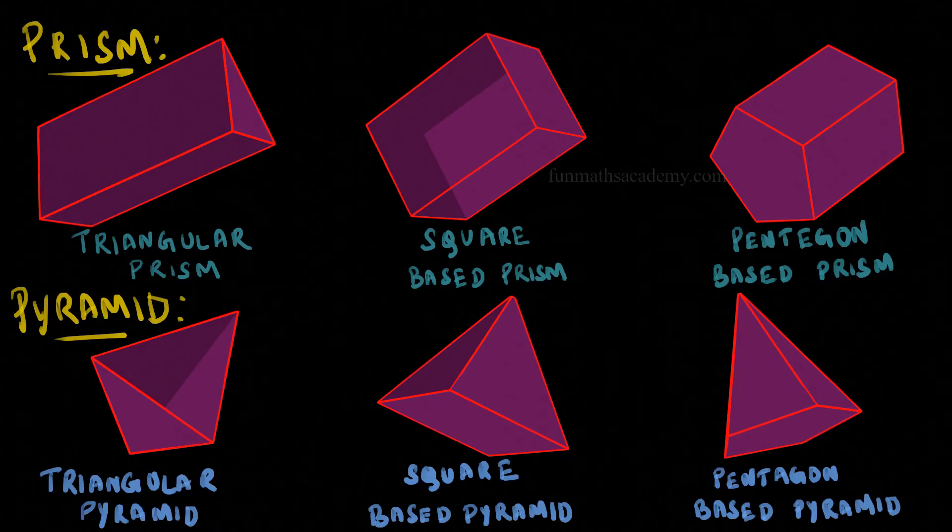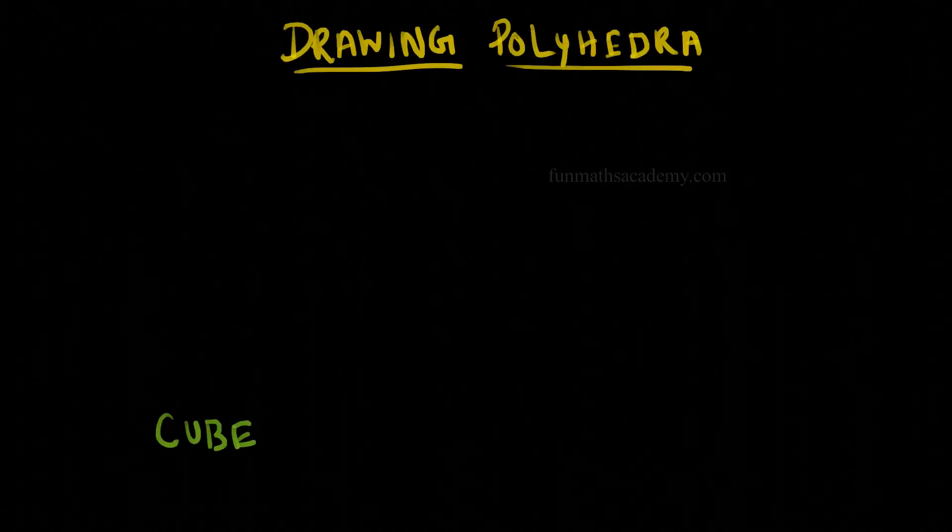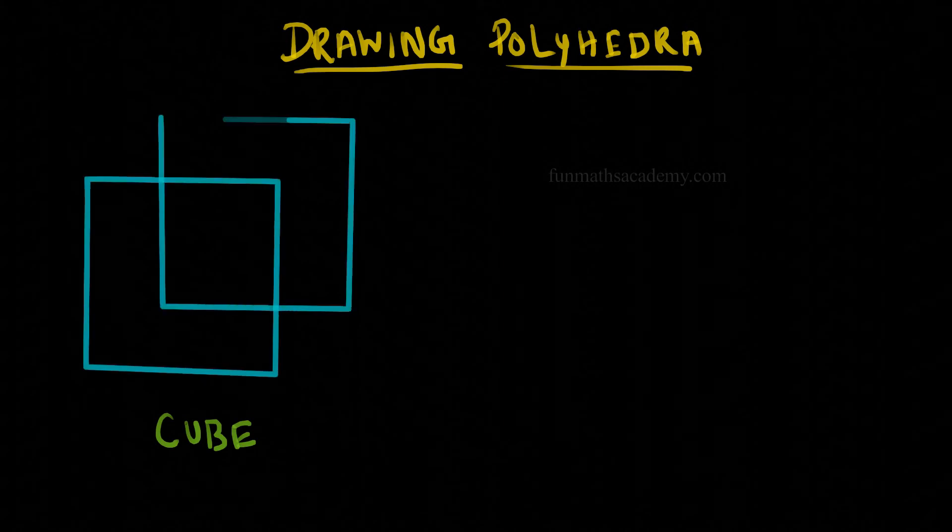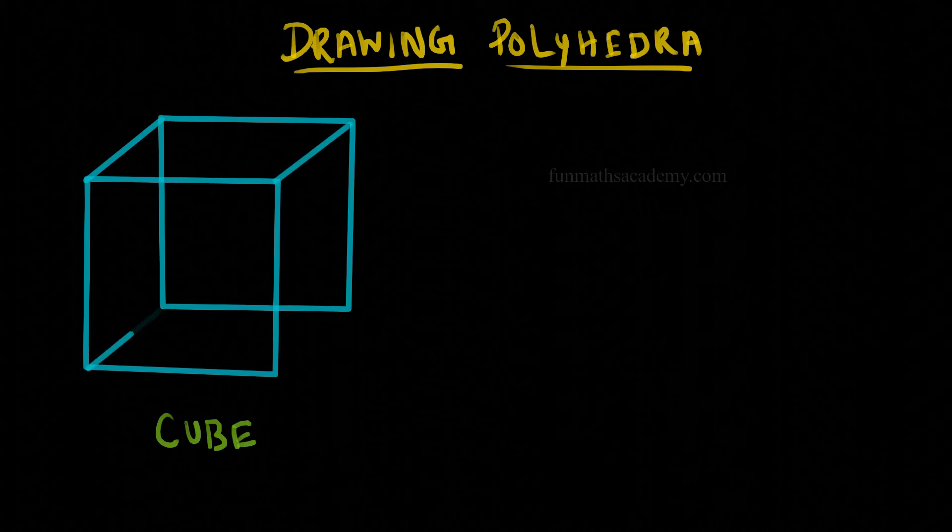We saw examples of polyhedron, that is platonic solids, prisms, and pyramids, right? But if someone asks you to draw these on a paper, then how will you draw? To draw a square-based prism, or in simple words a cube, how will you draw it? First, draw two squares close together like this and connect the diagonals together. That's all. This is a cube.